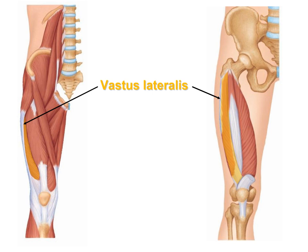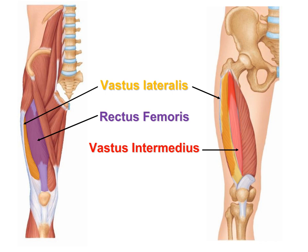You need to memorize and identify each of the four heads of the quadriceps complex. The vastus lateralis is on the lateral side of the thigh — vastus meaning large. Just medial is the rectus femoris — rectus meaning straight — which is the most conspicuous and strongest of the four. Deep to the rectus femoris is the vastus intermedius, a hidden muscle. Lateral to the rectus femoris is the vastus medialis.